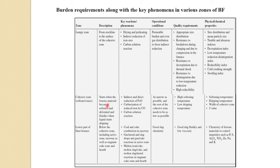In the cohesive zone, material starts softening, and towards the end of the cohesive zone it starts melting and dripping. Mostly indirect reduction and some direct reduction take place here. What you need is as narrow as possible a cohesive zone. The quality requirements are high softening temperature and low dripping temperature; tests done are softening temperature, dripping temperature, and width of cohesive zone (S value).